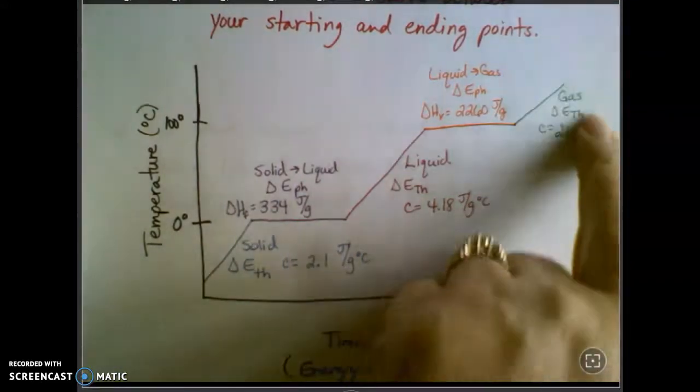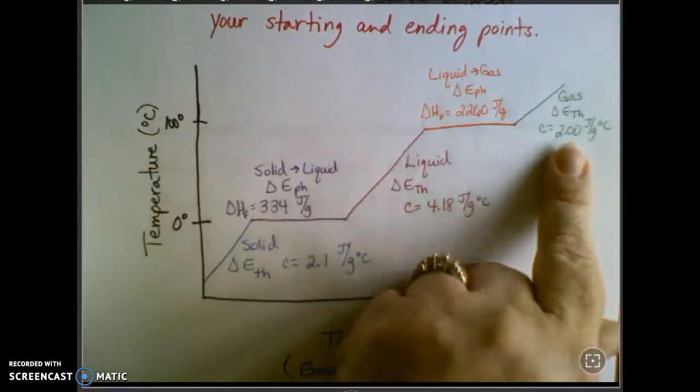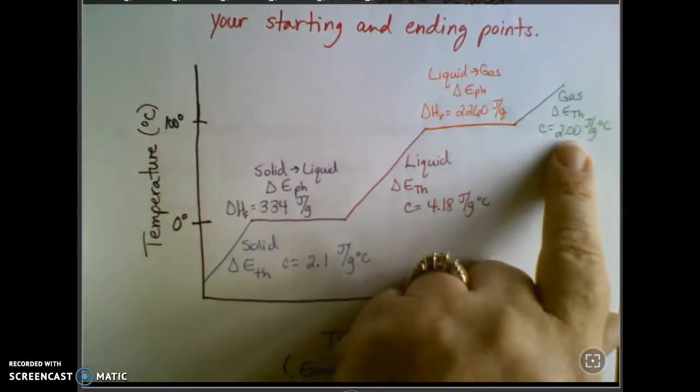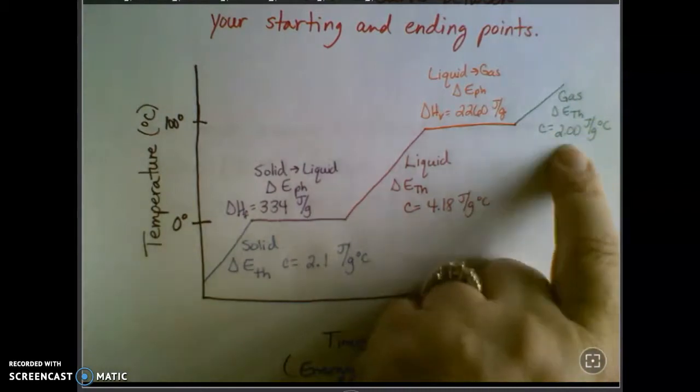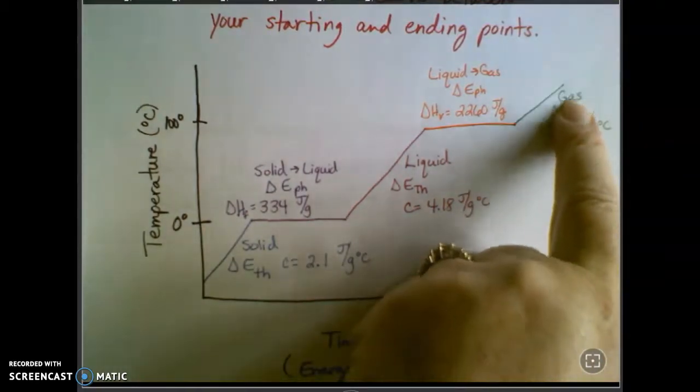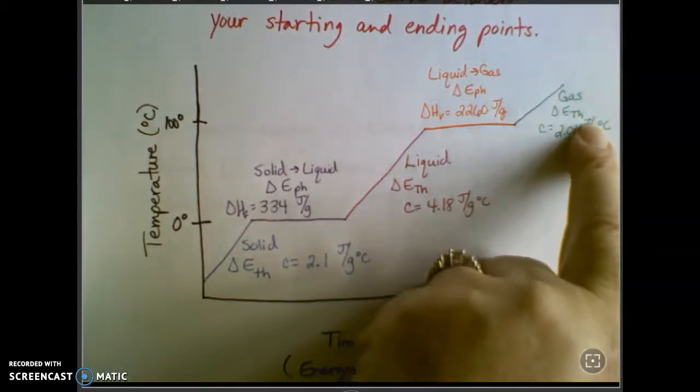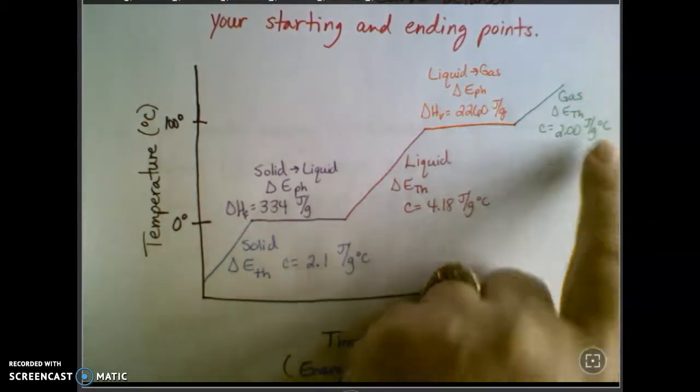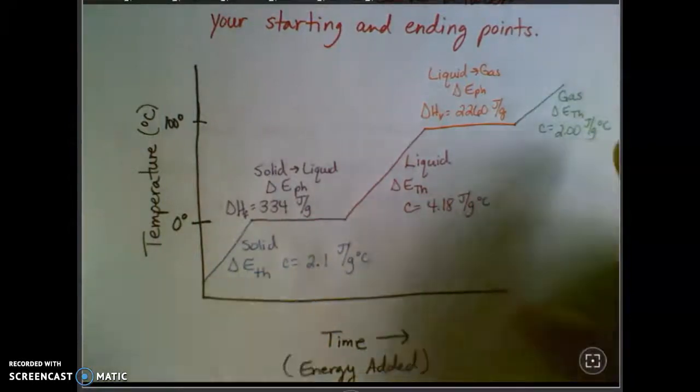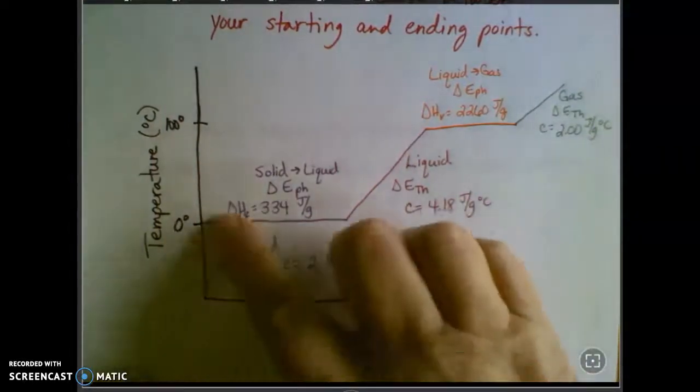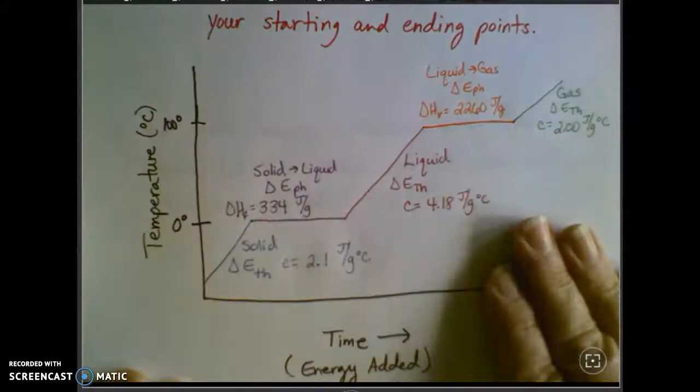And finally, we don't use them too much because usually we just let the gas kind of escape. But if you have the question or the problem that involved a change in temperature of the gas once everything was evaporated, that's two joules for every gram and every degree Celsius, kind of similar to the solid. So keep those in mind as we work through these problems.